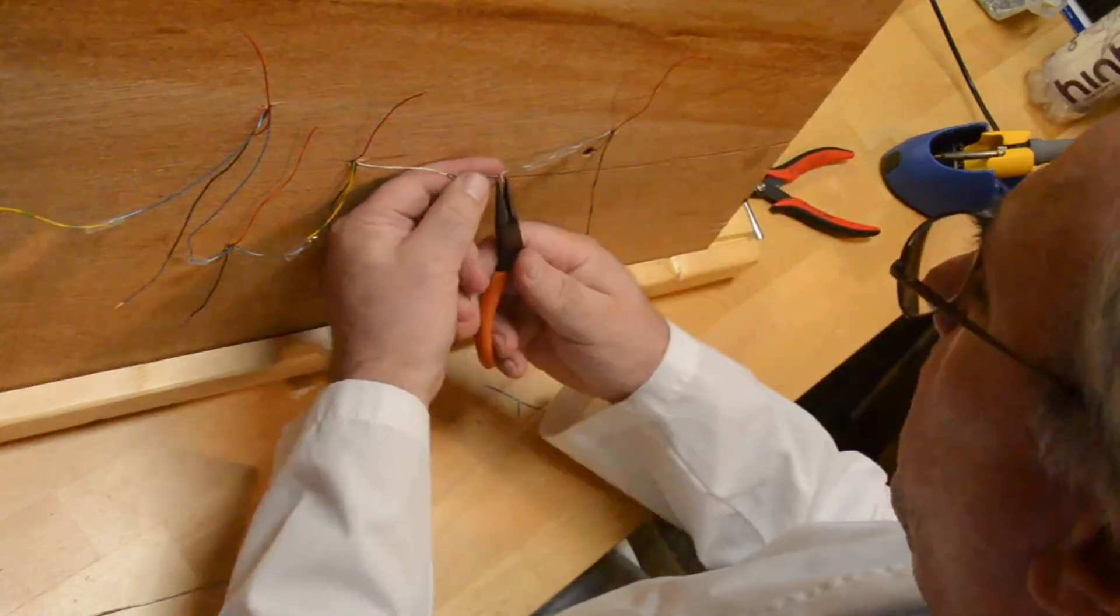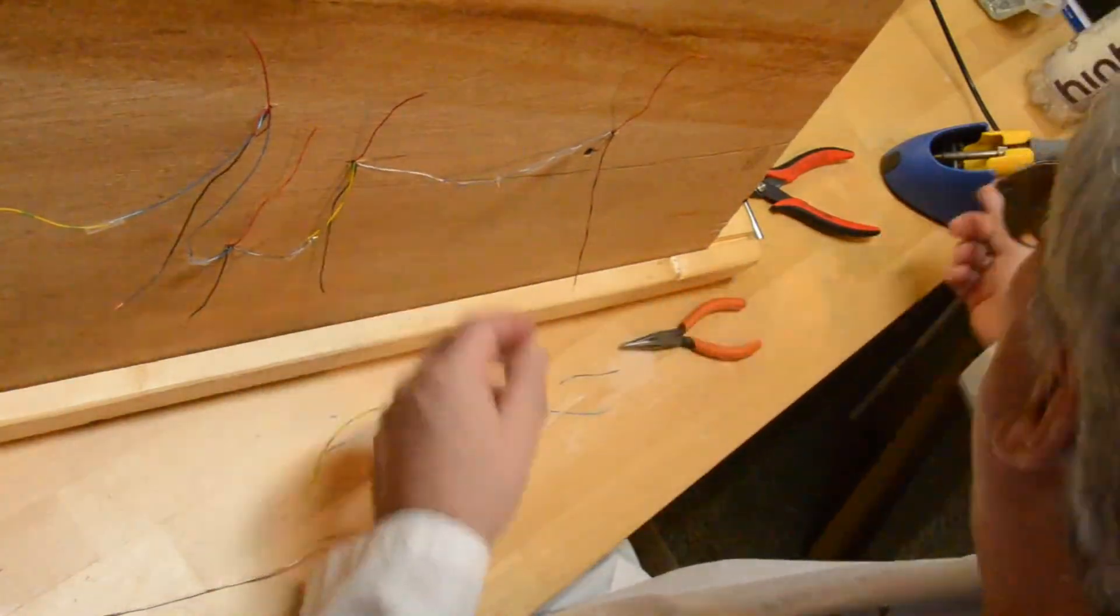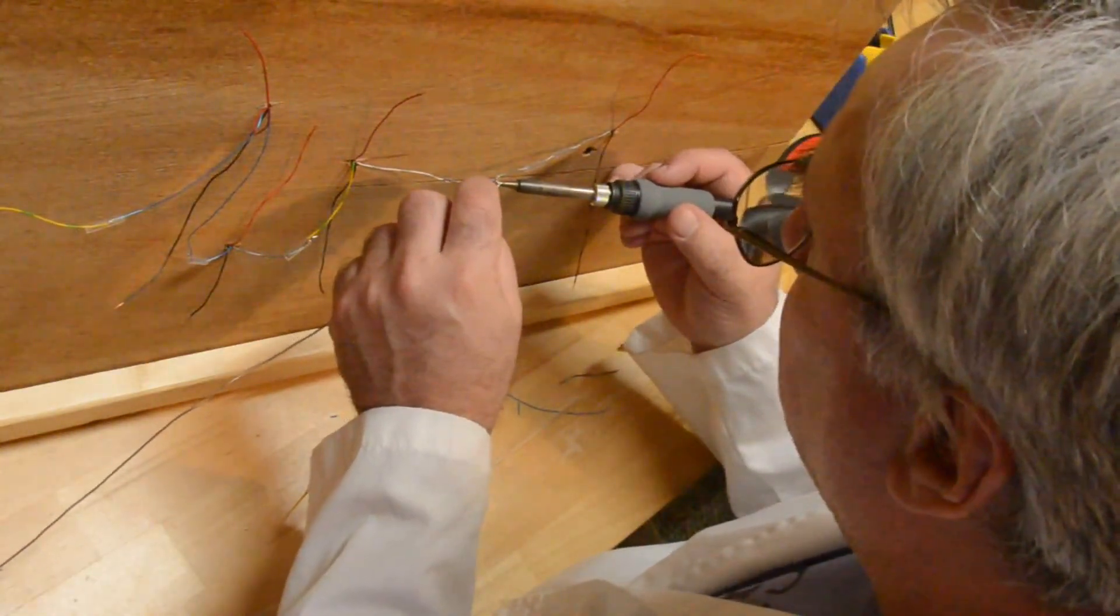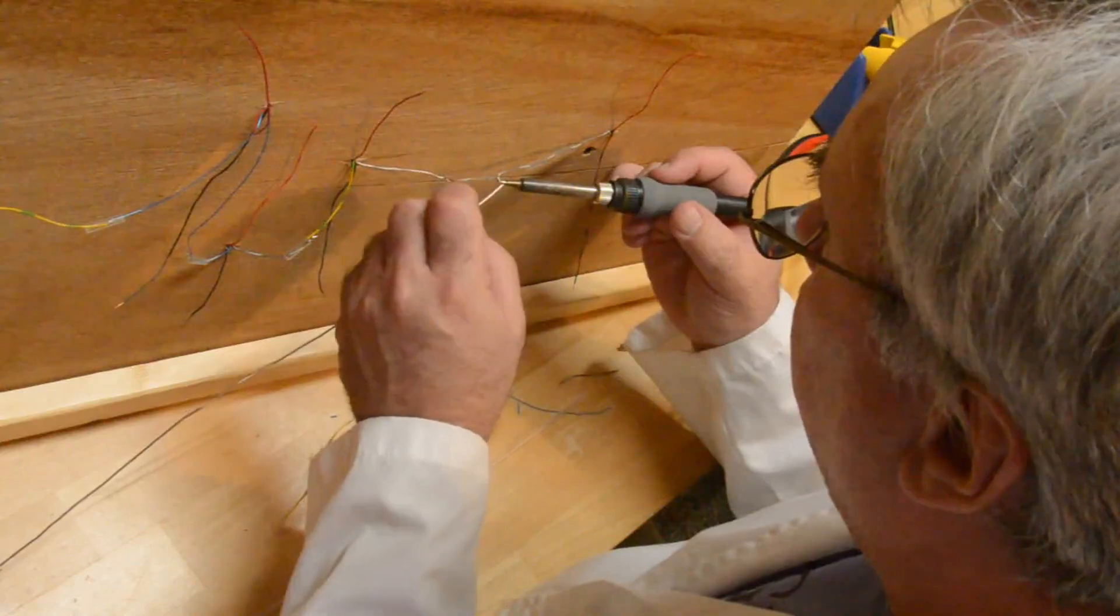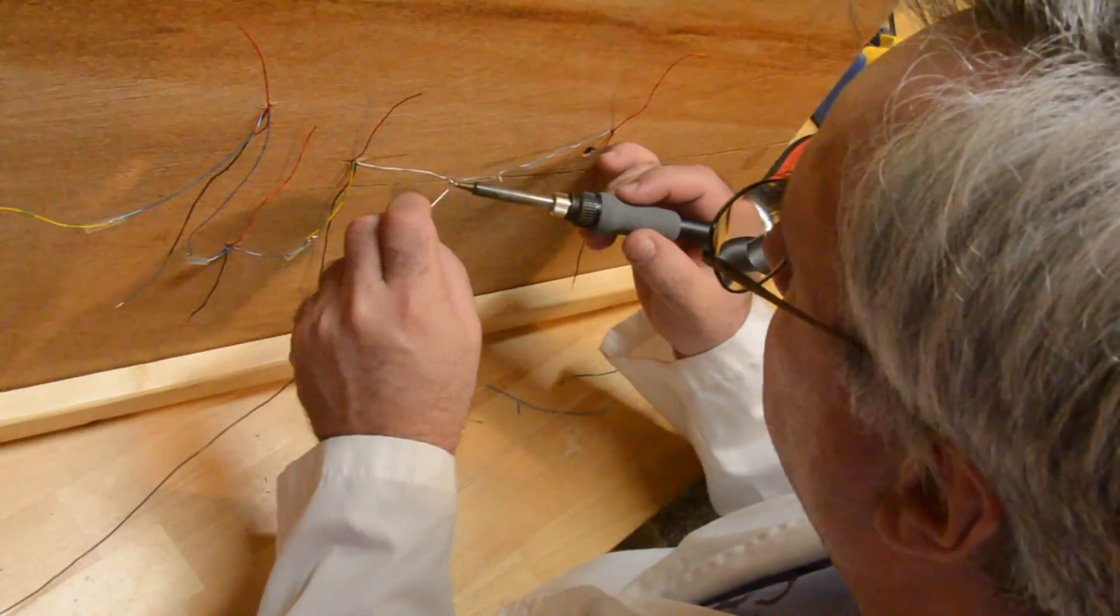So these wires didn't quite reach so I put a little jumper in here. No big deal. Just twist them together. The data in and the data out daisy chain and solder them up. Don't just twist them. Twist them and solder them. And then when you're done with that put on the heat shrink tubing.